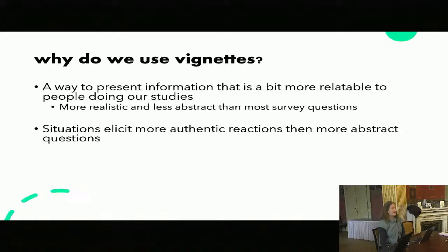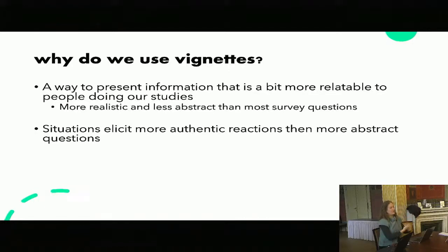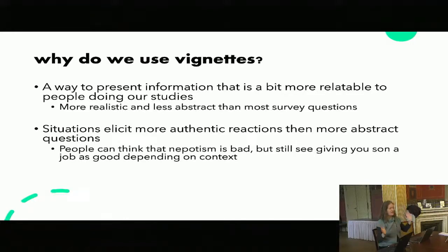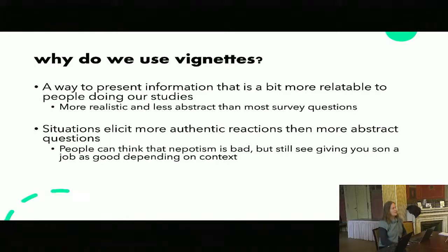These things can elicit more authentic reactions to abstract questions. Going back to John's talk — the idea that beliefs don't often relate to actual behaviors or they're inconsistent — for the sort of stuff that I'm doing, I honestly don't really care what people would say they believe if asked a question. I really want to know how it affects their behavior. People can say that nepotism is bad, but presented with a situation in a certain cultural context, they said, obviously, you would hire your son here over a more qualified person. If you don't do that, you're a terrible parent. Those are the sorts of things that I'm looking for.